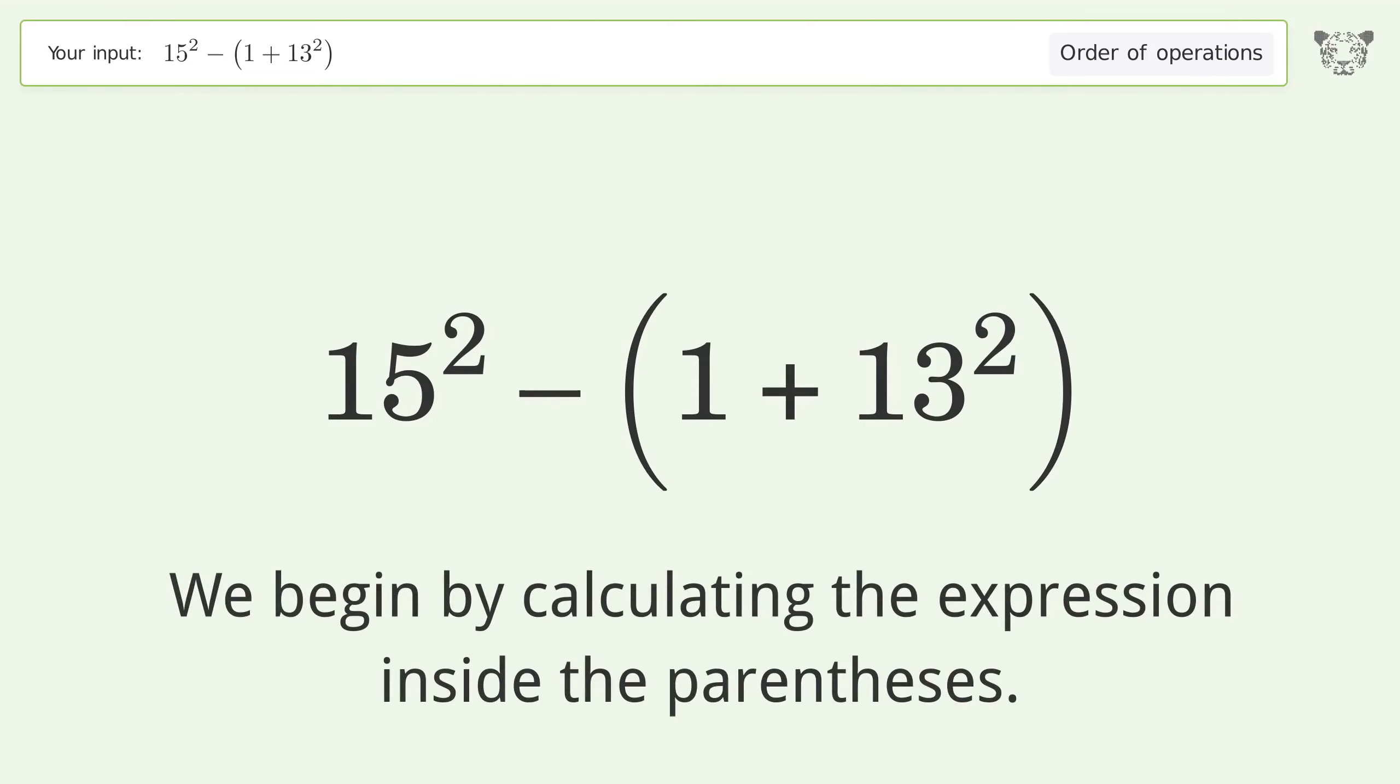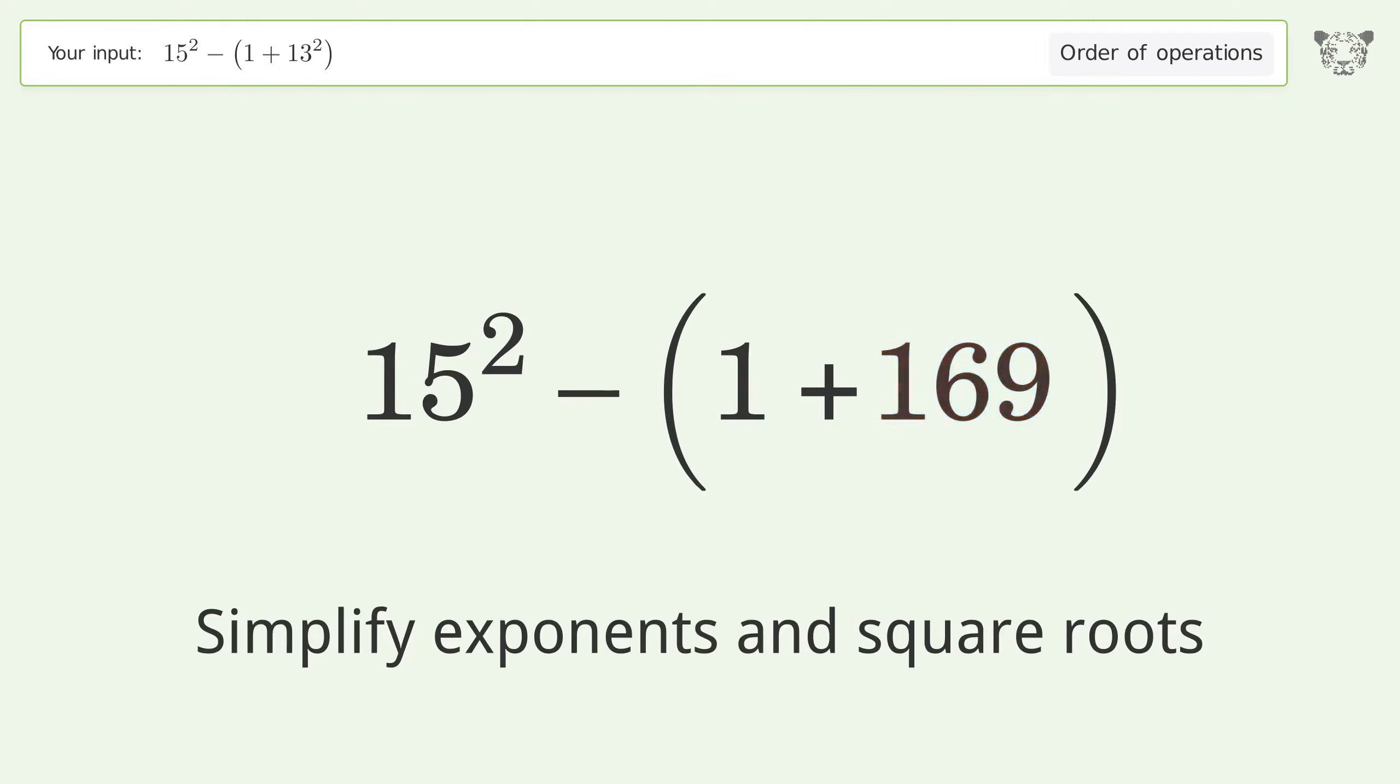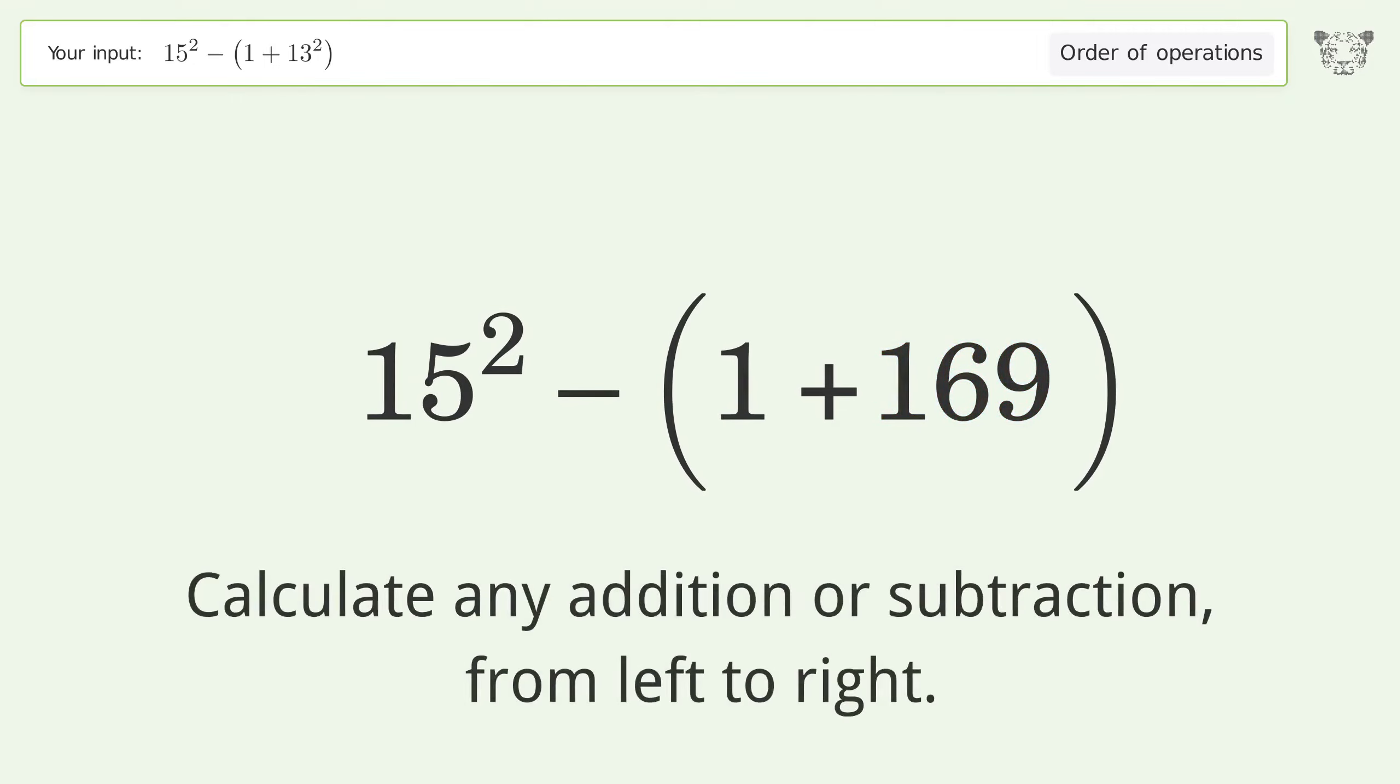by calculating the expression inside the parentheses. Simplify exponents and square roots. 13 to the power of 2 equals 169. Calculate any addition or subtraction from left to right. 1 plus 169 equals 170.